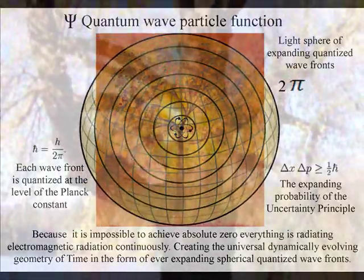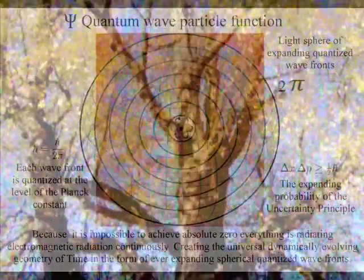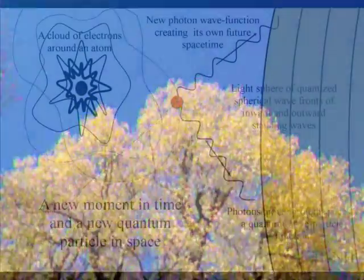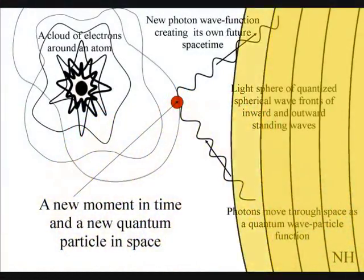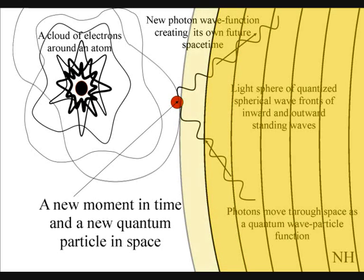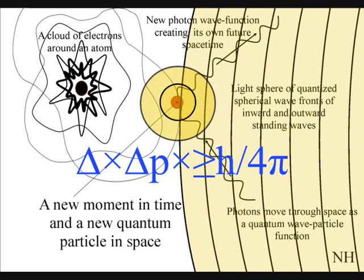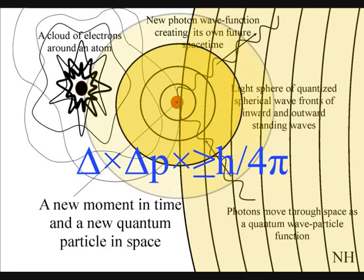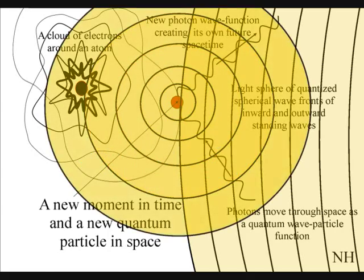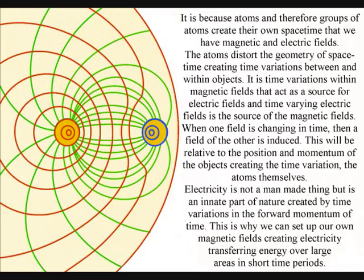In quantum atom theory, the atoms interact with light waves of electromagnetic radiation, continuously collapsing the quantum wave particle function, forming photons that form electrical charge and in turn form electromagnetic fields in three dimensions. This forms the local space-time geometry.